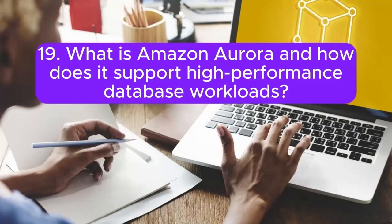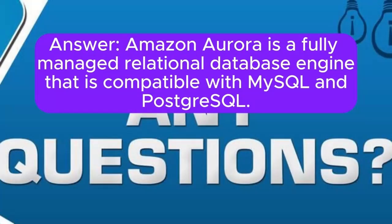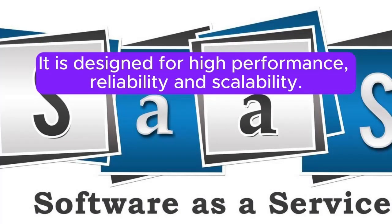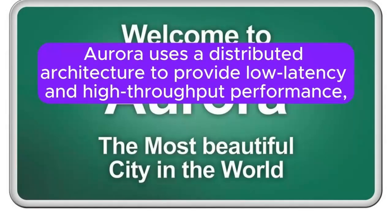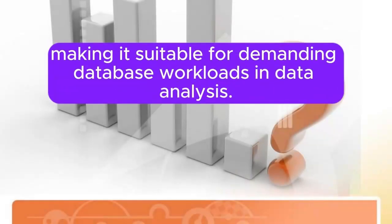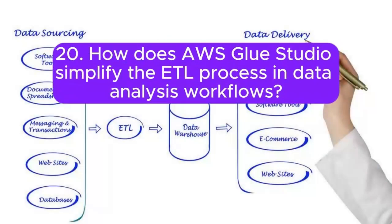19. What is Amazon Aurora and how does it support high-performance database workloads? Answer: Amazon Aurora is a fully managed relational database engine that is compatible with MySQL and PostgreSQL. It is designed for high-performance, reliability, and scalability. Aurora uses a distributed architecture to provide low-latency and high-throughput performance, making it suitable for demanding database workloads in data analysis.